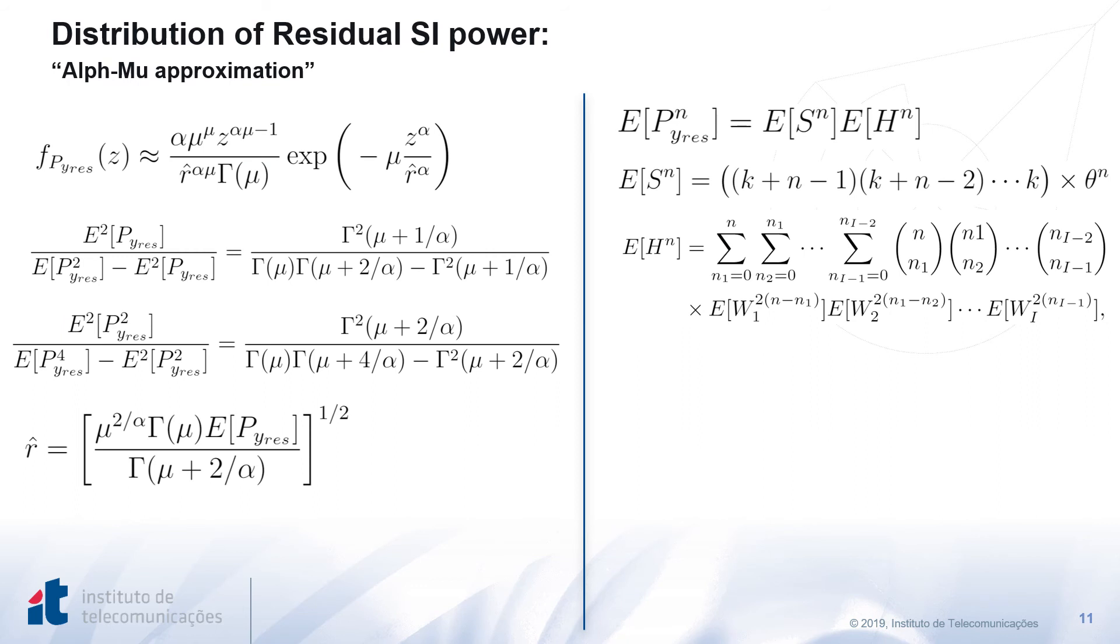Alpha-mu distribution has been used to approximate the sum of independent non-identically distributed gamma random variables in several works. Its PDF is defined as f_P of y residual of z. In order to compute this PDF, the parameters alpha, mu, and r-hat have to be estimated. A three-equation system is defined for the estimation process. Given that S and H are independent, then the high-order moments of P can be computed by the multiplication of the moments of S and H individually. The high-order moments are given by the expectation of S to the power n, while the high-order moments of H are given by the expectation of H to the power n.